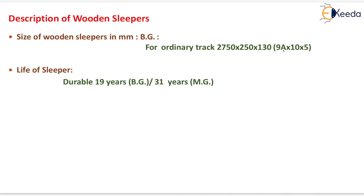Description of wooden sleepers: size for broad gauge ordinary track is 2750 × 250 × 130 mm. The life of the sleeper is 19 years for broad gauge and 31 years for meter gauge.